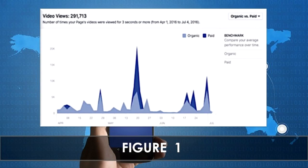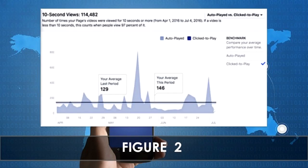You have the option to filter your stats in Organic vs. Paid, Auto-Played vs. Click-to-Play, or Unique vs. Repeat. The video view in the news feed lasts for 3 seconds, even if the video is auto-played or clicked-to-played. For additional details, you can hover and then click anywhere on the chart. Overview metrics can assist you by determining the right days that are good for live streaming, as well as to compare the right type of approach that leads to a video view.